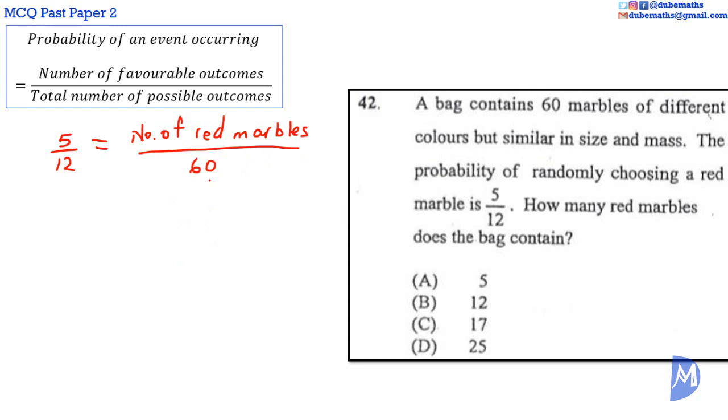If we multiply by 60, we would move the 60 from this side, thus making the number of red marbles the subject of the formula. We multiply by 60 on both sides. When we multiply by 60 on the right-hand side, the 60s would cancel to remain with just the number of red marbles.